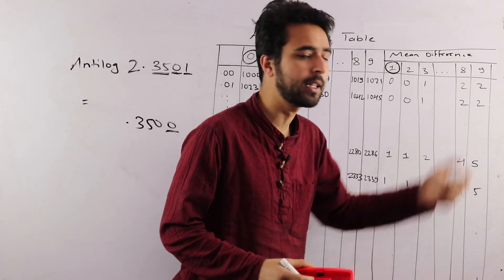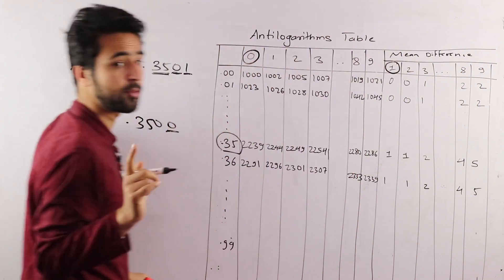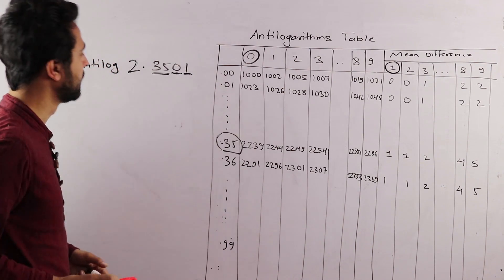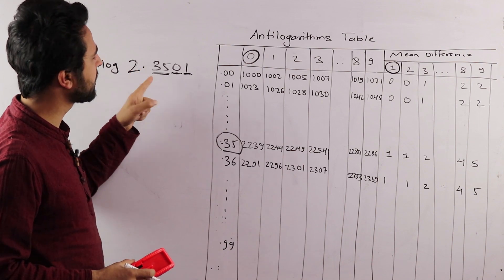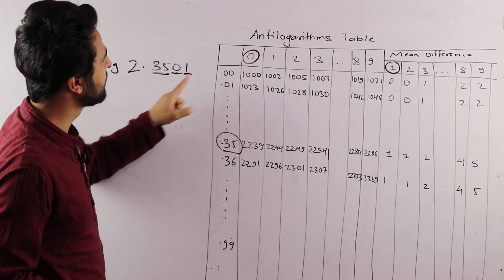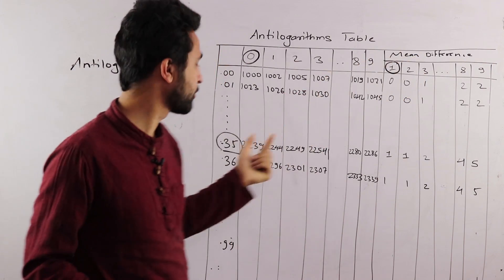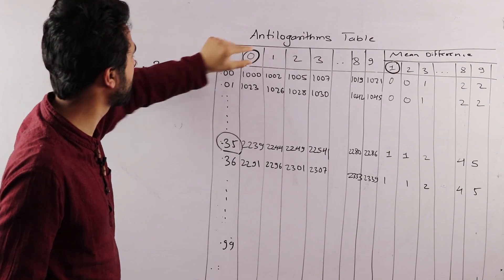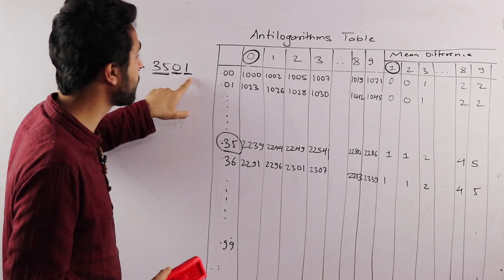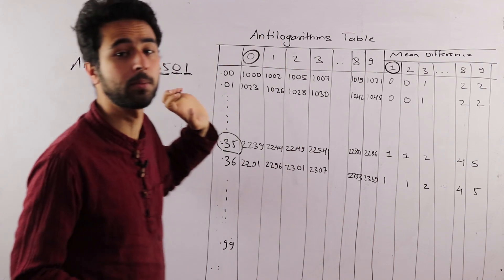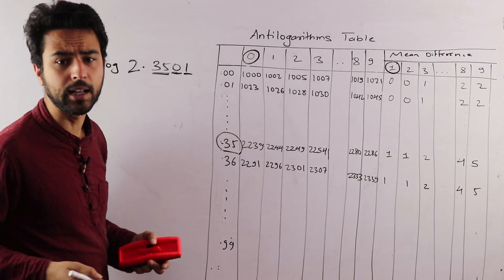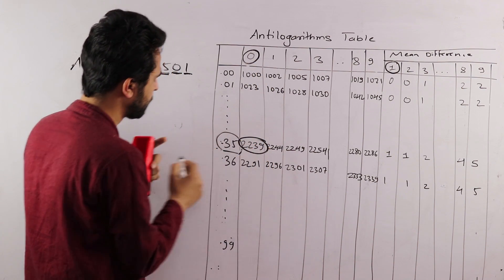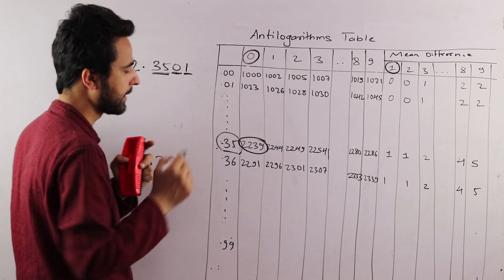Now, the main difference is 0. Indicating that 2.350 gives 0 here, 0 here, and 1 is 1. The mean difference is in the first column — this is your third digit. The fourth digit you get by looking at the corresponding value.